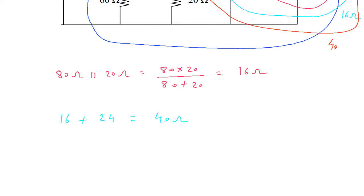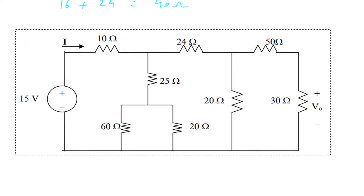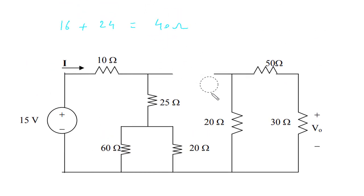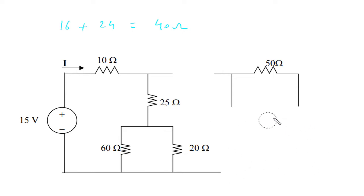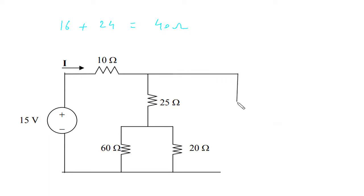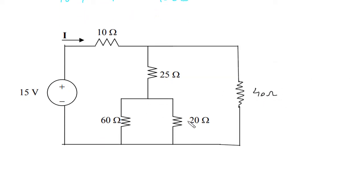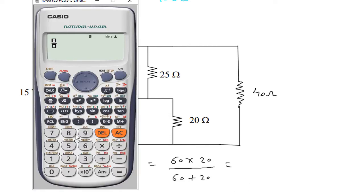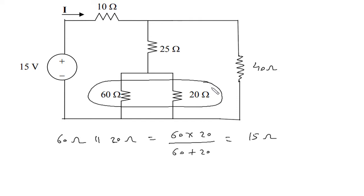Let us redraw the circuit again. Up to this point it will be 40 Ohm. Then 60 Ohm and 20 Ohm are in parallel: 60 into 20 upon 60 plus 20, which gives 15 Ohm.